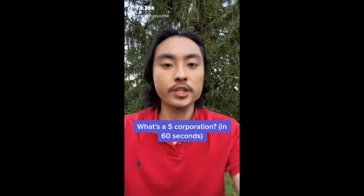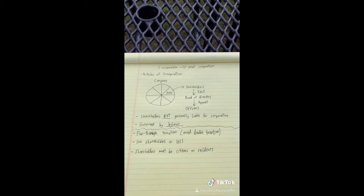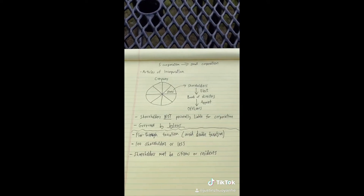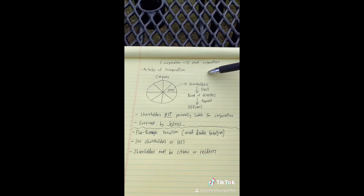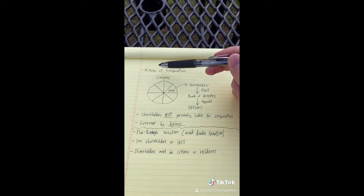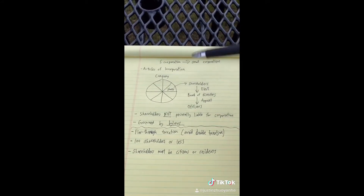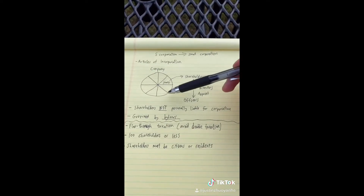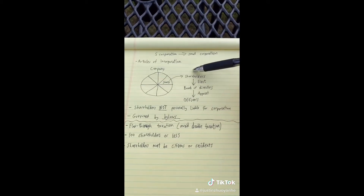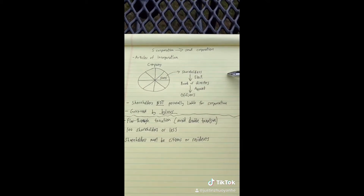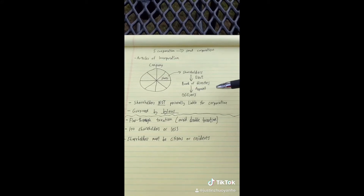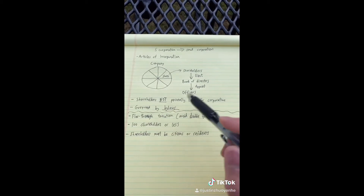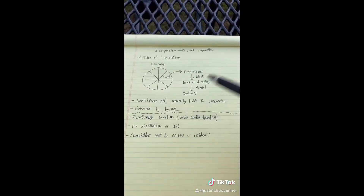What's an S corporation in 60 seconds? An S corporation is a business entity available for small corporations. It is very similar to a C corporation in that it's formed by articles of incorporation filed with the government, and it has the same structure with ownership divided into shares held by shareholders who elect a board of directors who oversee the company and appoint officers who run the company. Like C corporations, shareholders are not personally liable, and it is also governed by bylaws.